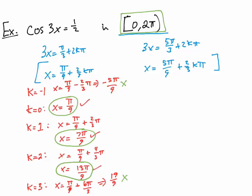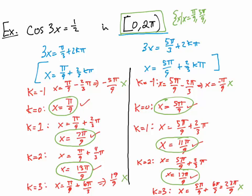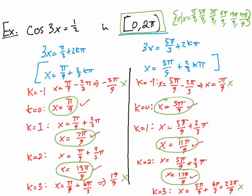That's just half of the problem. Solving the second equation — 3x = 5 pi over 3 plus 2k pi — following the same procedure, we get solutions 5 pi over 9, 11 pi over 9, and 17 pi over 9. So we get six solutions total. The solution set is all x such that x equals pi over 9, 5 pi over 9, 7 pi over 9, 11 pi over 9, 13 pi over 9, and 17 pi over 9.